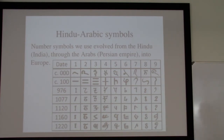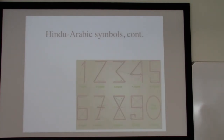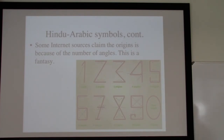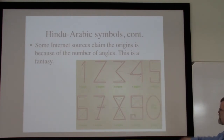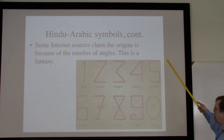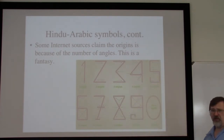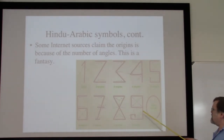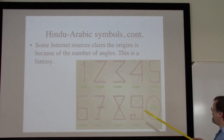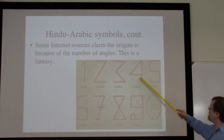I mention this not because I'm going to spend more time on this history — I find it interesting to see how these numbers have developed. But there is an awful lot of nonsense on the web. For example, something that's been going around on Facebook is this false history that the digits we use come from the number of angles within the various digits. I hope you realize that most of these things have very little to do with the actual origins of the numbers.